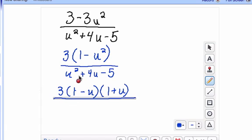And then the denominator, I can factor this. I'm looking for two numbers that multiply to give me a negative 5, but adds to give me a positive 4. So it's going to be a positive 5 and a negative 1.